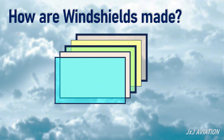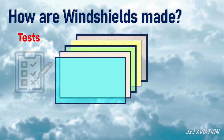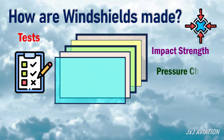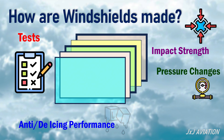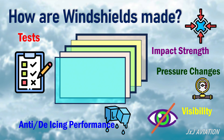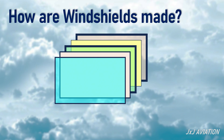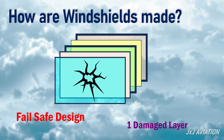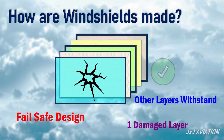The windshields have to undergo different tests for impact strength, pressure changes, anti-ice or de-icing performance, and visibility. The layers of the windshield form a fail-safe design. This means that even if one layer is damaged, the other layers can withstand the aerodynamic and impact loads.